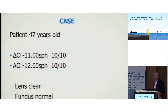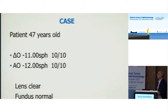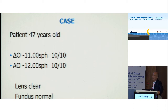Now that we have become masters of refractive thinking, the first patient is 47 with high myopia — minus 11. The lens is clear and the fundus is normal. So it's a refractive paradise. Shall we do laser, maybe leaving two to three diopters of myopia since laser cannot reach 12 diopters?